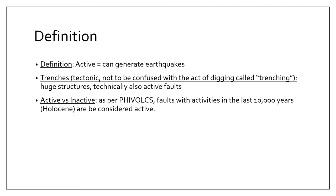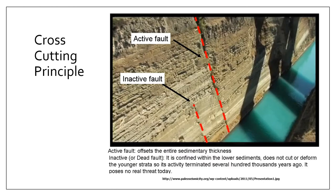Trenches are huge structures and technically they are also active faults. For active versus inactive faults, as per PHIVOLCS and as per USGS, active faults are ones that have had activity in the last 10,000 years. So its last activity should be at most 10,000 years old or younger for a fault to be considered active. If the fault's activity is more than 10,000 years, then we can consider it an inactive fault which cannot produce earthquakes, statistically speaking.